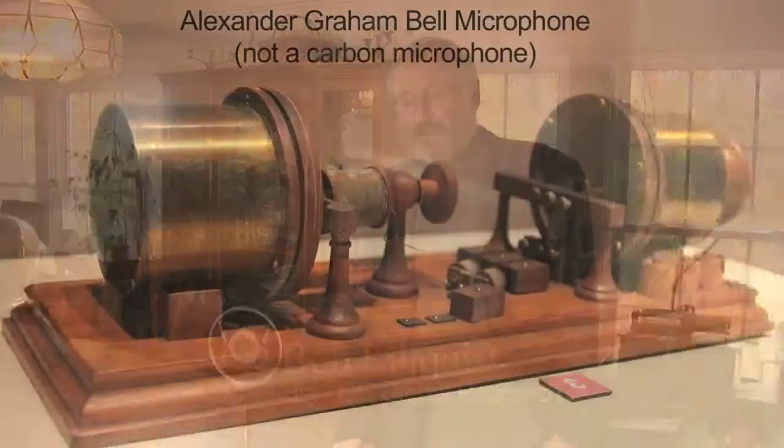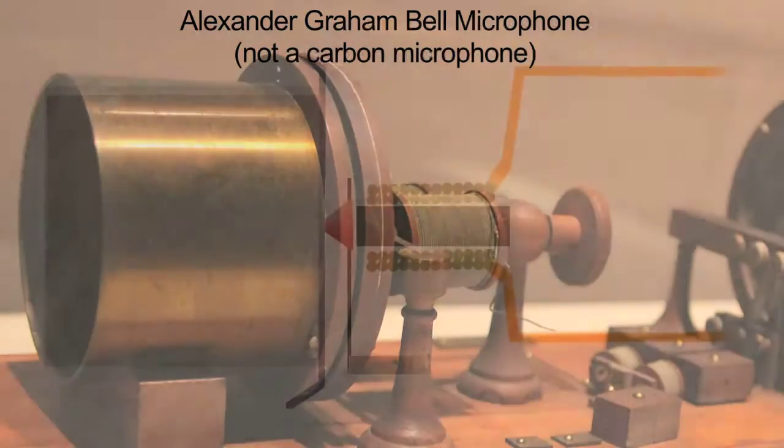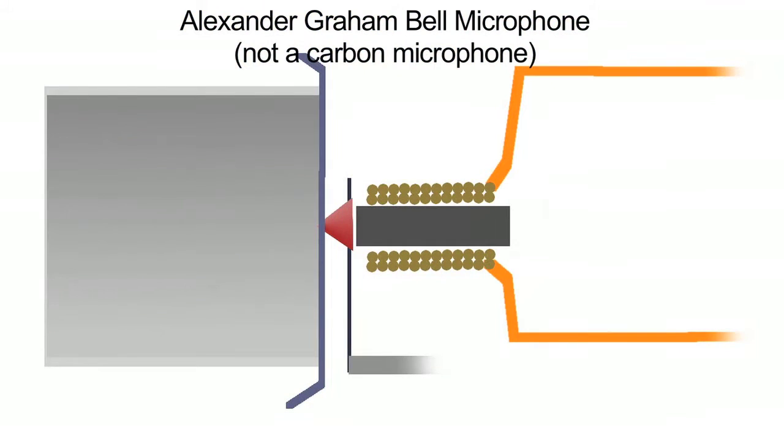One of Edison's first experiments when he moved to Menlo Park was improvements on Alexander Graham Bell's telephone. Bell's telephone used electromagnetic induction for both the transmitter and the receiver.